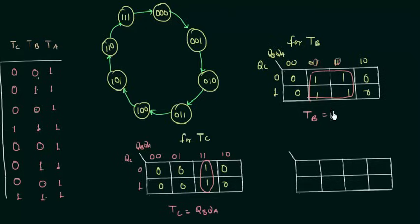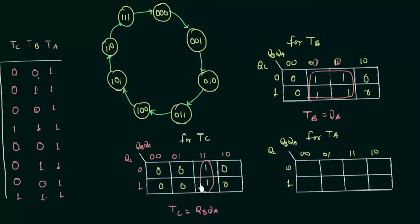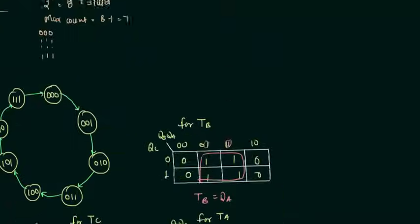Now we solve the last K-map for TA. The inputs are QC, QB, QA with values 0, 0, 0, 1, 1, 1, 1, 0. TA is 1 for all cases, so there is a group of 8 ones in this map and TA is equal to 1.